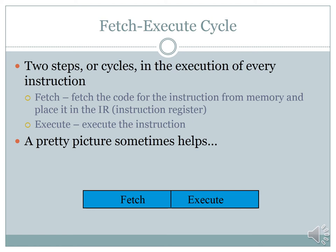How does a computer execute an instruction? In simplified terms it is just two steps: first, it fetches the code for the instruction from memory and places it in the Instruction Register; then it executes the instruction. So it is fetch and execute.